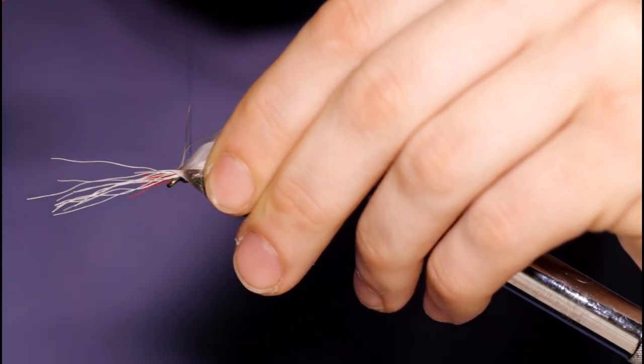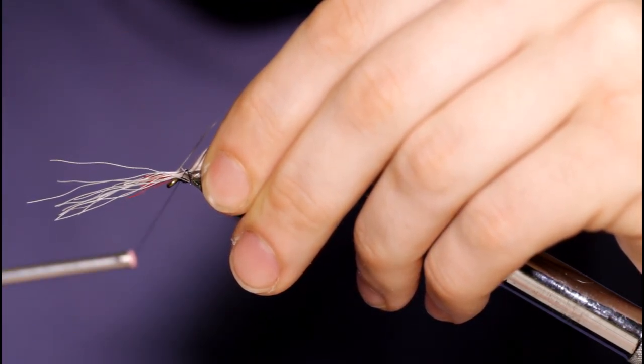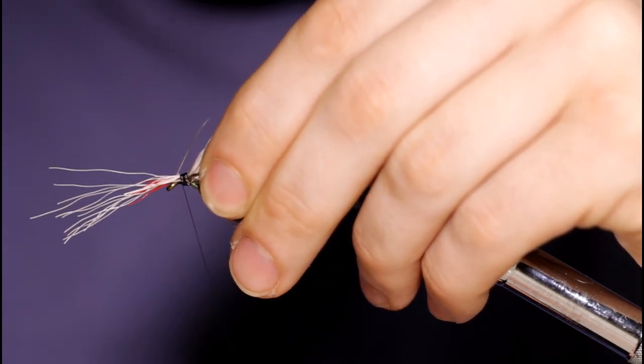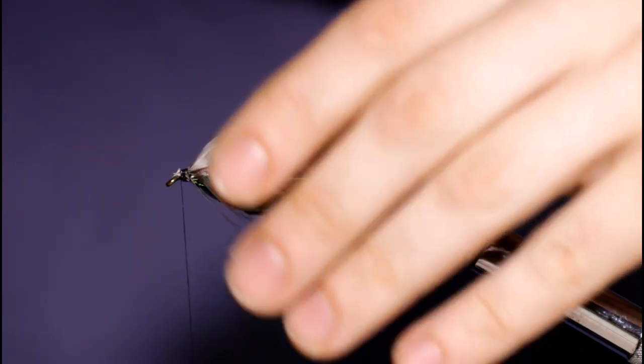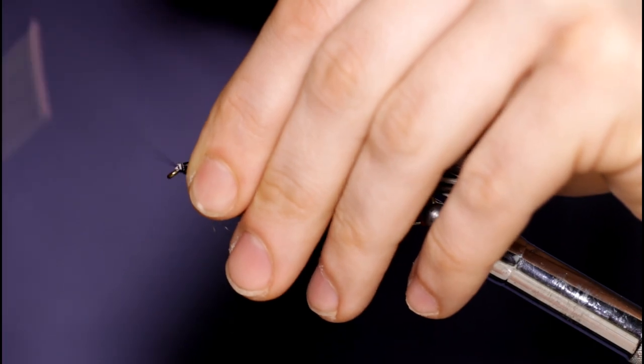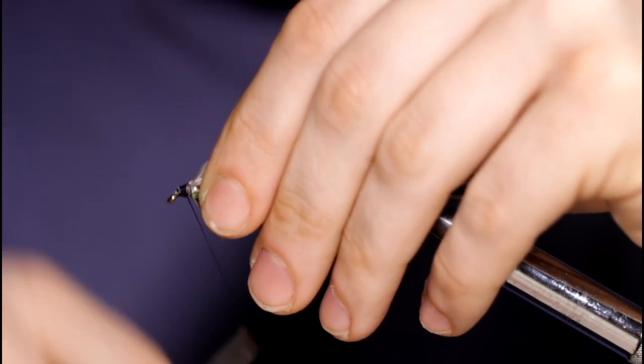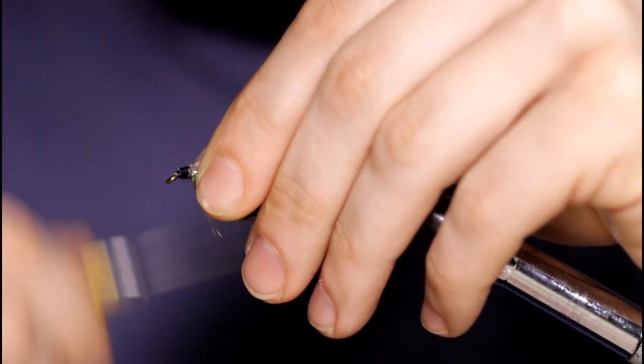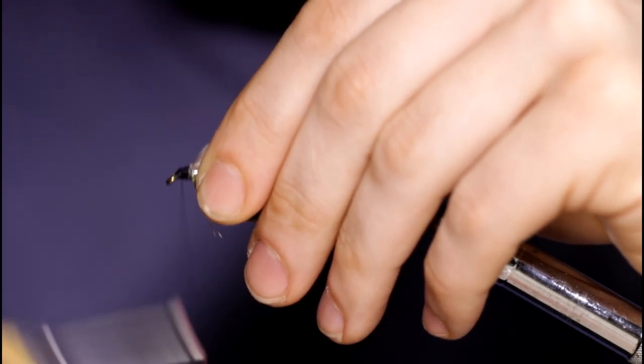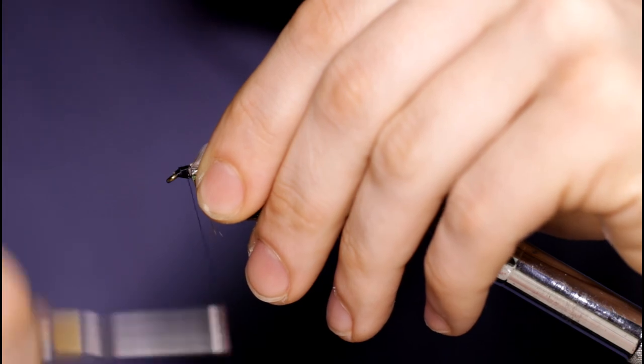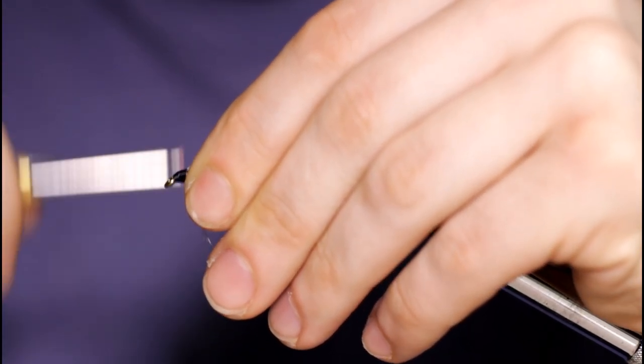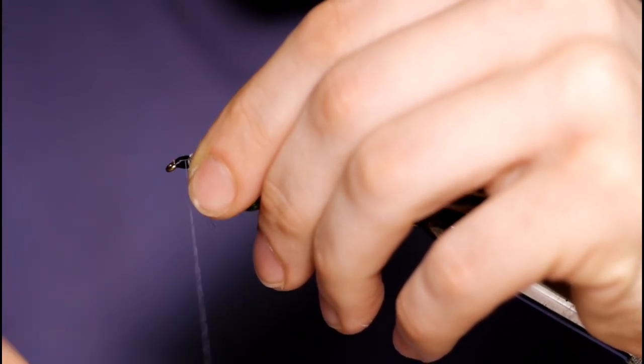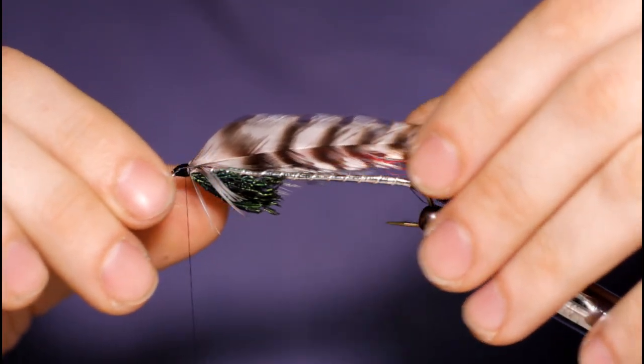Take the thread over the top. Loose turn. Another loose turn. Now I'm really going to bind everything down. Build up a nice neat head with this black thread, evening it out, making sure everything's covered. And that looks good.